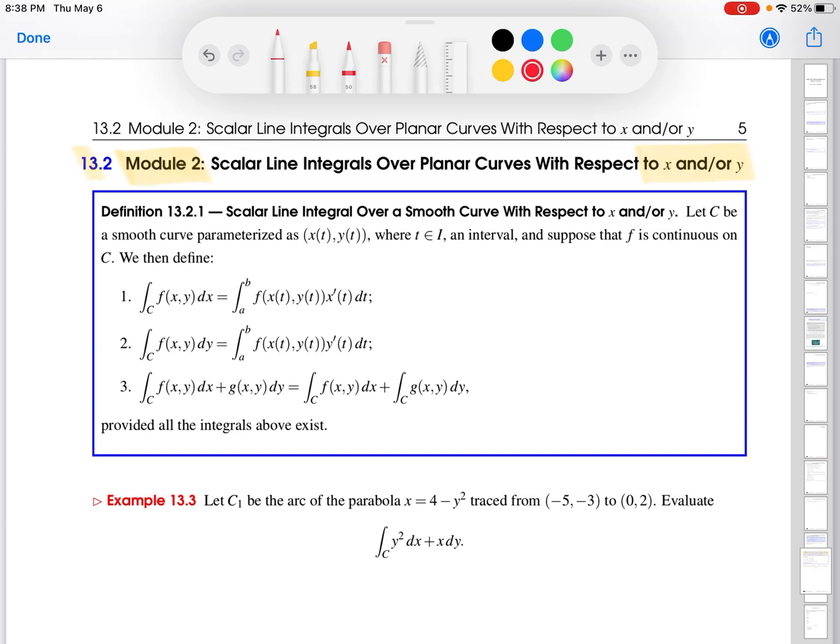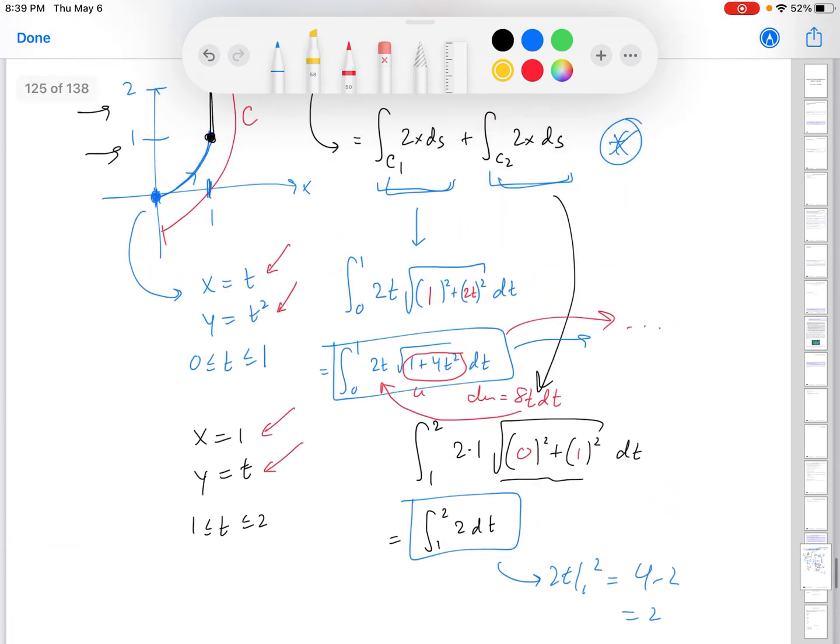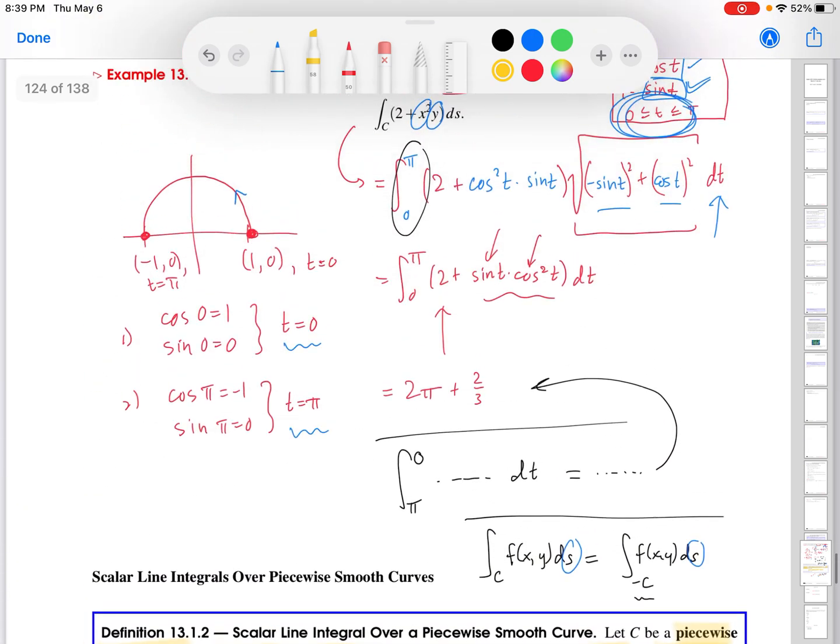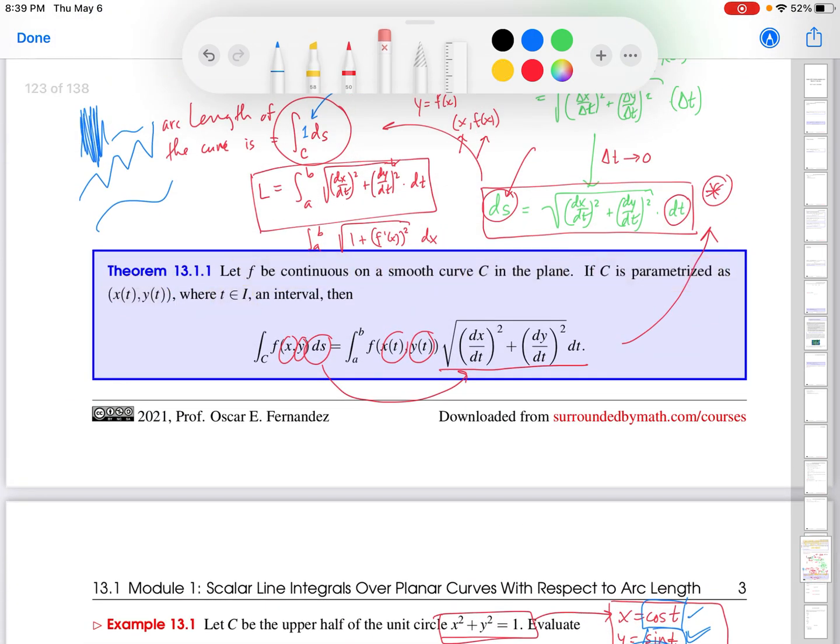And I've defined here in this definition how that works. It's effectively a copycat of the definition for the line integral with respect to arc length in the sense that if I just scroll up and remind you of how we had operationalized that definition over here, what we said was that if you wanted to calculate that integral, you parametrize the curve first in terms of x of t, y of t. And then you substitute x and y into your function. And then ds becomes this. So that was the equation that we derived.